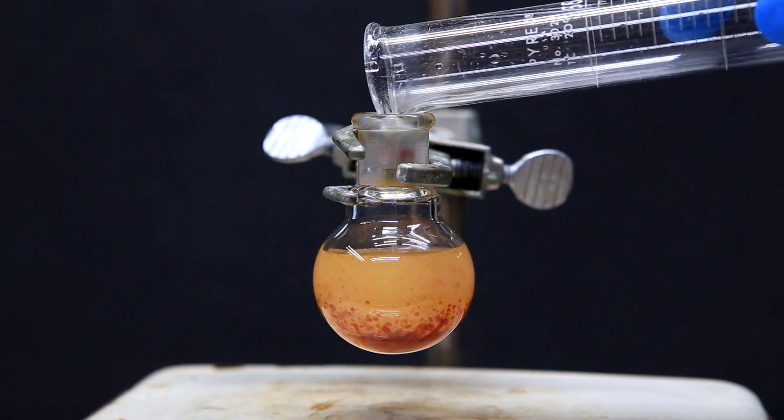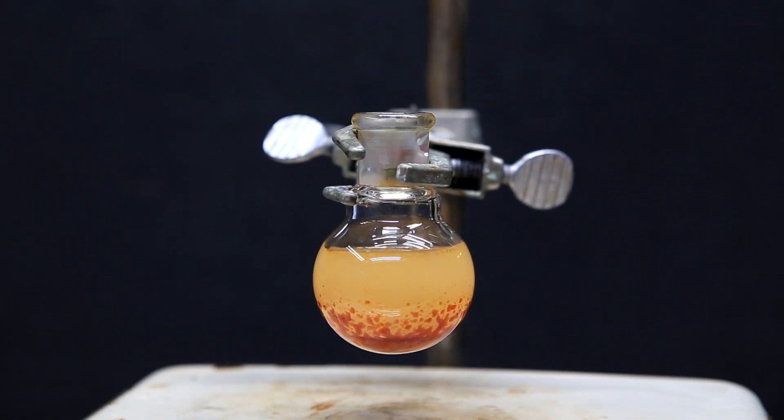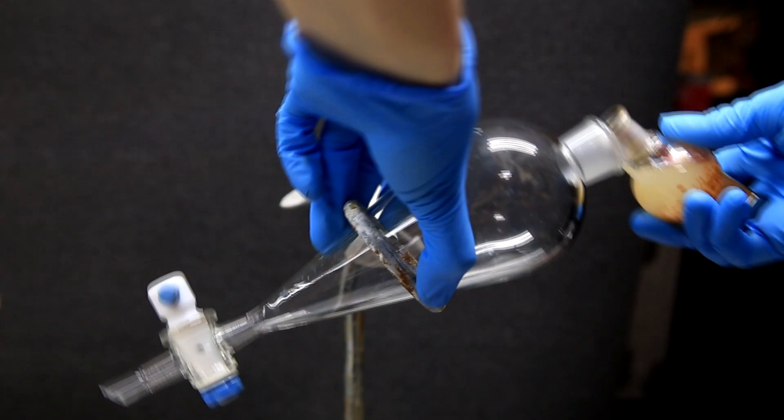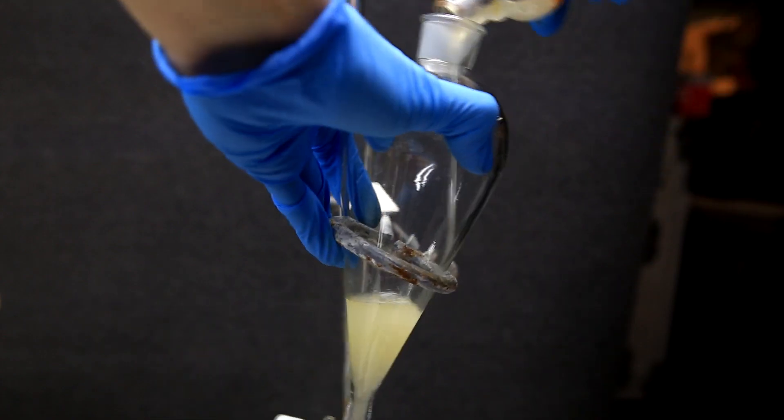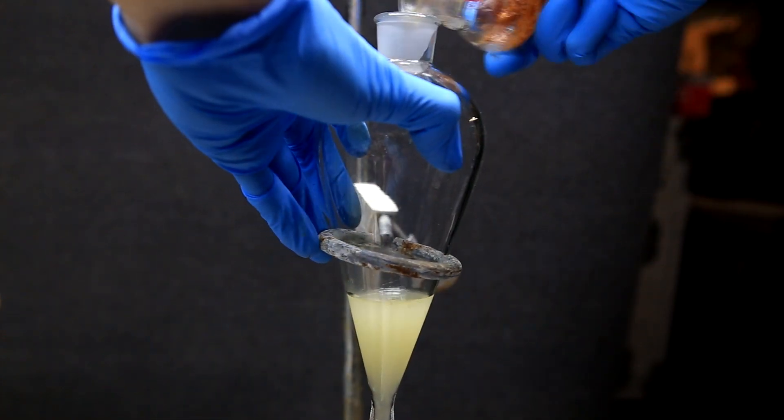Up until now, the stinkiness of the skatol really wasn't an issue, but from this point on, it's going to be a little bit of an annoyance. A lot doesn't dissolve in this layer, which makes sense because indole isn't really soluble in water. Anyway, the water is added to a separatory funnel, and then we continue washing out the crude residue.